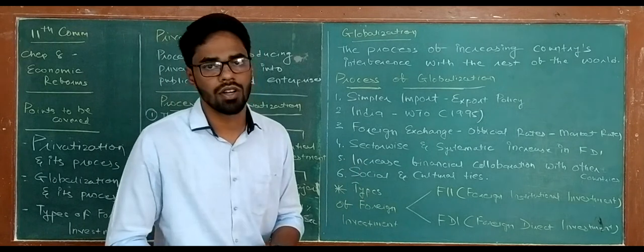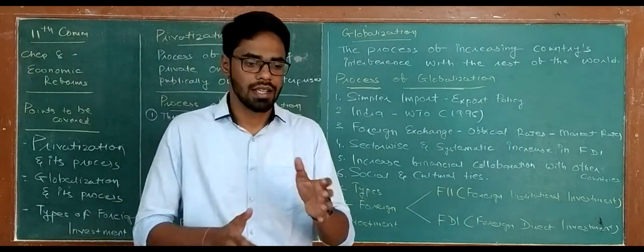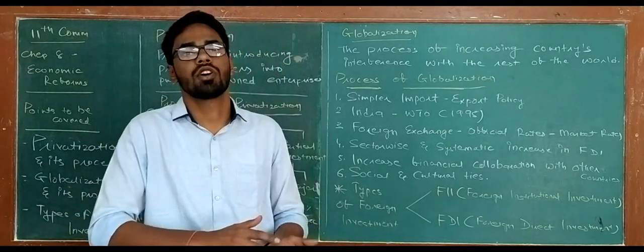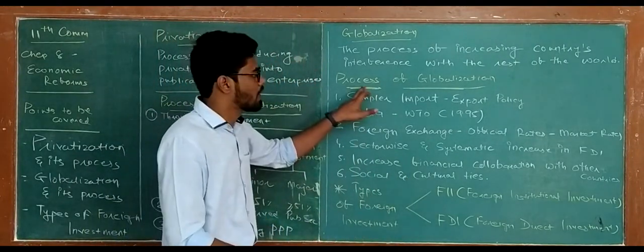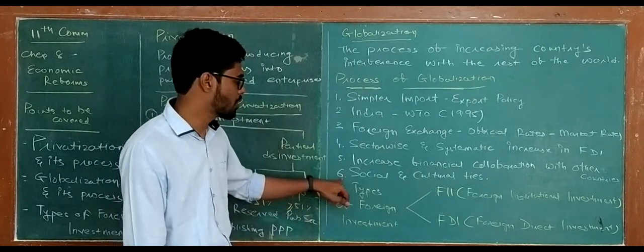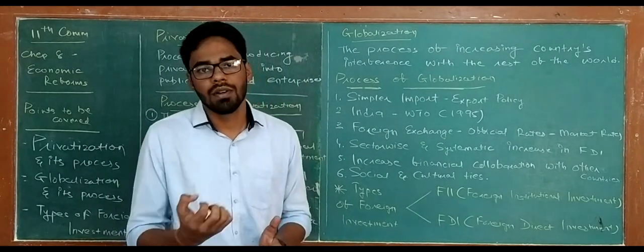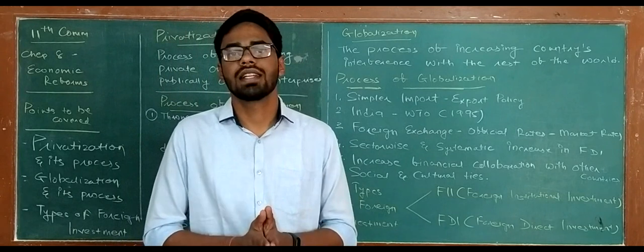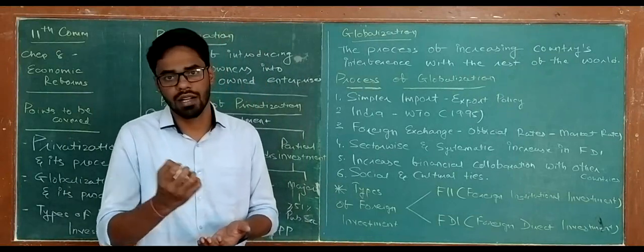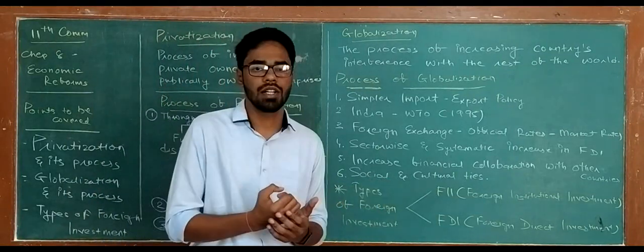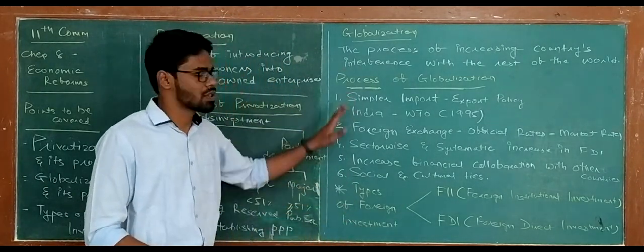The fifth point is to increase financial collaboration with other countries — India is making collaboration with the US, with China, and with the rest of the world. The sixth point is social and cultural ties. When doing business in the rest of the world, we first need to understand their social and economic conditions, and we need to understand their culture so we can sell products accordingly. This concludes the process of globalization.